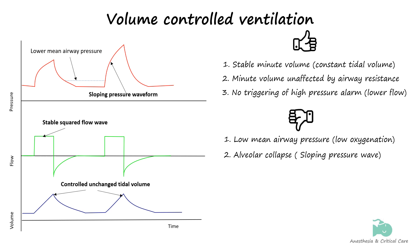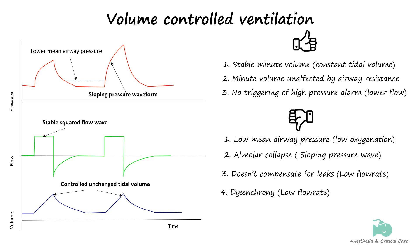In cases where there is a leak, mean airway pressure can become unstable. The constant flow used in volume-controlled ventilation might not adequately compensate for intermittent leaks. If the rate of the leak matches the inspiratory flow rate, no volume will be delivered to the patient. Lastly, insufficient flow during volume-controlled ventilation can lead to patient-ventilator dyssynchrony. If the patient's respiratory demand increases during a breath and the ventilator cannot provide the necessary flow, it may fail to meet the patient's needs.